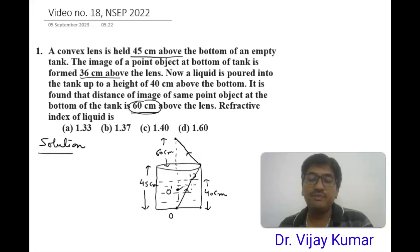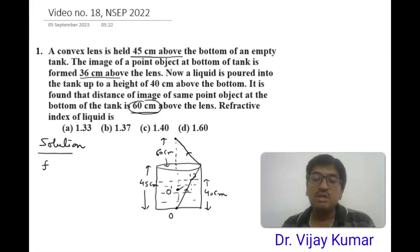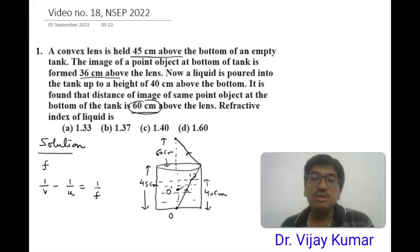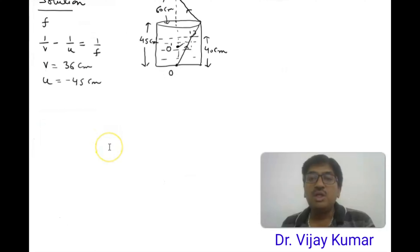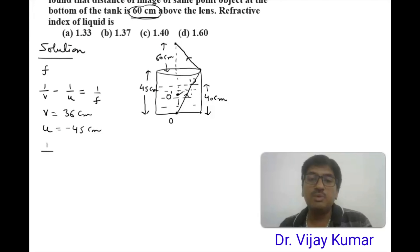Suppose f is the focal length of the lens. Initially, when the tank is empty, we apply the lens formula: 1/v − 1/u = 1/f. From the question, v is 36 centimeters and u is −45 centimeters. So for the empty tank: 1/36 − 1/(−45) = 1/f.